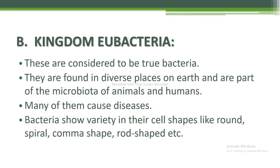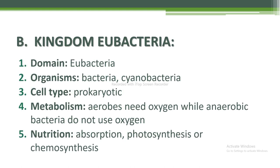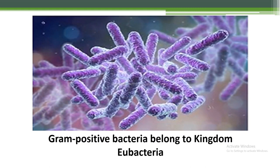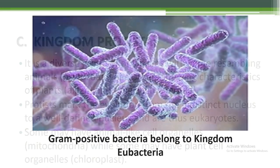Next I am going to discuss the kingdom Eubacteria. These are considered to be true bacteria and are found in diverse places on earth, forming part of the microbiota of animals and humans — many of them cause diseases. Bacteria show variety in their cell shapes: round, spiral, comma-shaped, and rod-shaped. Domain is Eubacteria. Organisms include bacteria and cyanobacteria. Cell type is prokaryotic. Metabolism: aerobic bacteria need oxygen, while anaerobic bacteria do not use oxygen. Nutrition through absorption, photosynthesis, or chemosynthesis. Reproduction is asexual by binary fission with a high growth rate. This is gram-positive bacteria belonging to kingdom Eubacteria as shown in the figure.